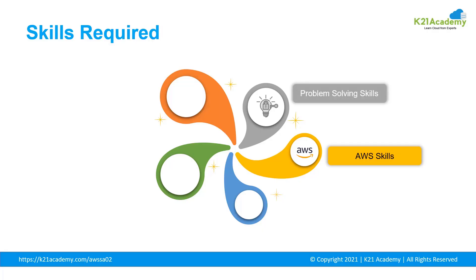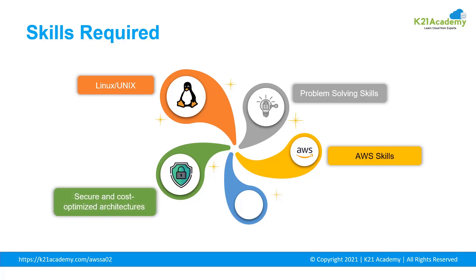The second skill is problem solving. As a solutions architect, you have to provide constant solutions for all client needs, so strong problem-solving skills are essential. The third skill is Linux and Unix — a lot of software and websites are hosted on Linux-based systems, so you should know shell scripting and other Linux-based operations. Fourth, you should be able to build secure and cost-optimized architectures that cannot be breached by hackers or attackers.